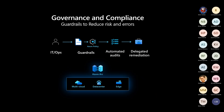From a governance and compliance perspective — one of the biggest draws for our customers — Arc lets you protect your infrastructure from mistakes. For example, it's easy to know how much of your infrastructure is patched to the latest updates or has the right security policies through Azure Policy. You can do automated audits to check compliance with your own IT security rules, and then orchestrate remediation, either manually or automated.